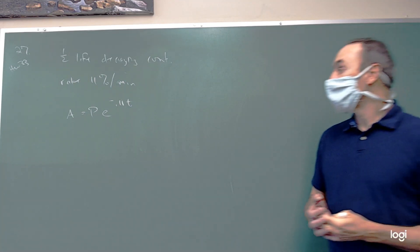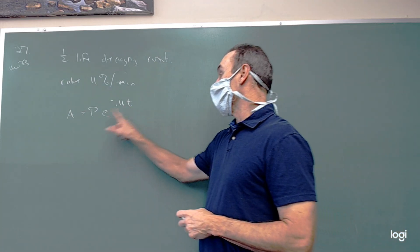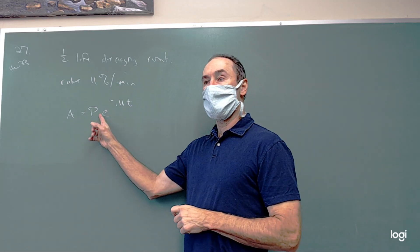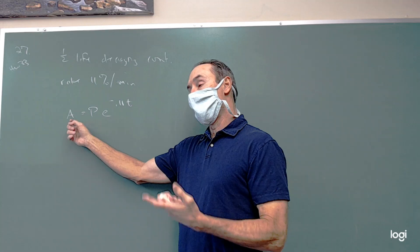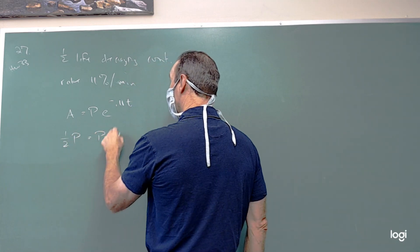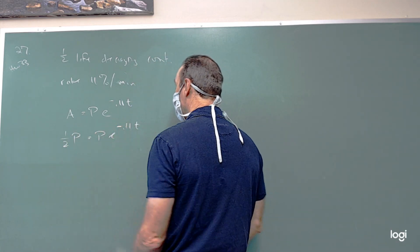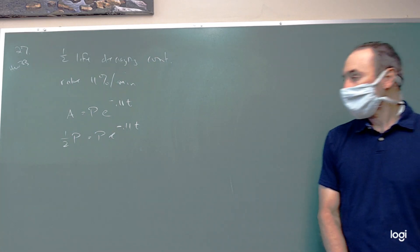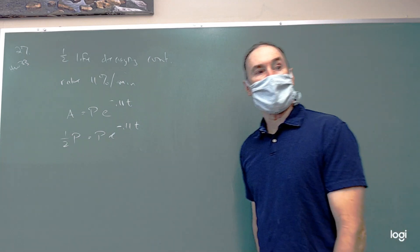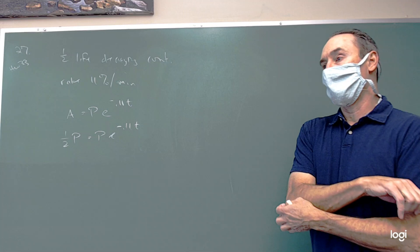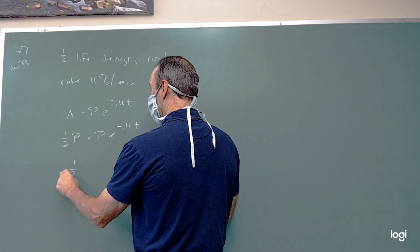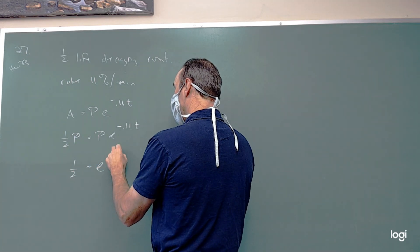We want to know its half-life — how long will it take until we have half of what we started with. Our starting amount, when you plug in 0, is P. So half of that is going to be one-half P. Now we want to solve for t. We can divide by P — it turns out it doesn't matter how much you start with, since it takes the same amount of time for a ton to decay as for an ounce. Dividing out, we have one-half equals e to the negative 0.11t.